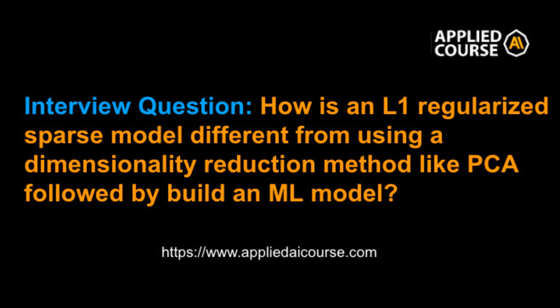So instead of going through the PCA route — first performing PCA and then training a model — it is better to directly apply L1 regularization. If your concern is overfitting, you have hyperparameter tuning on lambda. You apply the same method where on the y-axis you have your performance metric, on the x-axis you have lambda, and you plot how your performance changes as lambda changes. You would find the sweet spot where your performance is high and your number of zeroed-out features is also reasonable.